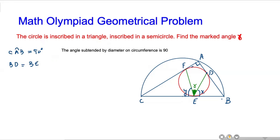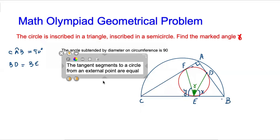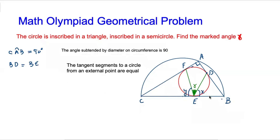Using the property of the circle: tangent segments drawn to a circle from an external point are equal. Therefore, from external point B, the tangent segments BD and BE are equal in length. Since BD equals BE, triangle BDE becomes isosceles, with ED as the base.